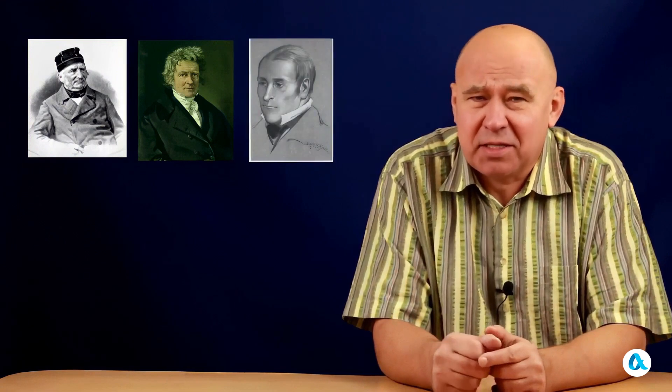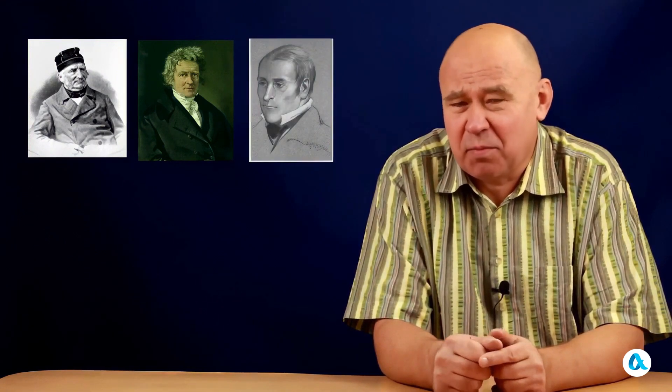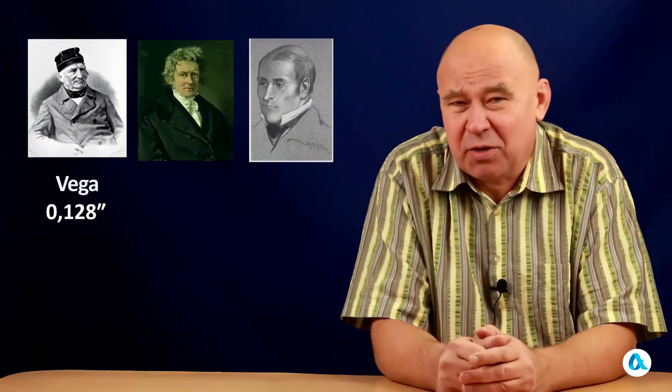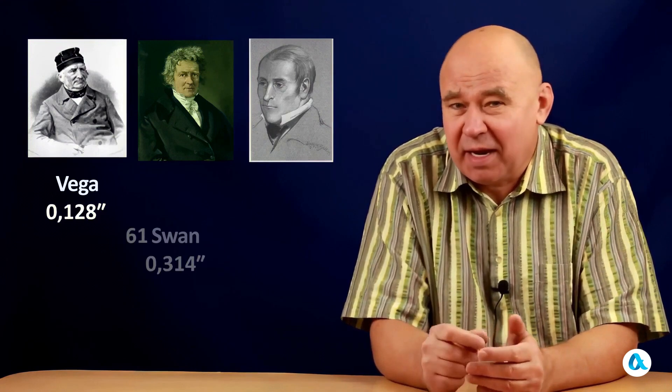And this task was accomplished independently by three astronomers in 1838. This was Friedrich, also known as Vasily Yakovlevich Struve, who worked in Derpt, now Tartu, and he measured the parallax of the star Vega, Alpha Lyrae, which we see overhead in the evenings during autumn. The second astronomer was Friedrich Bessel. He worked with the star 61 Cygni. And the third was the Englishman Thomas Henderson, and he measured the parallax of Alpha Centauri, working in the Southern Hemisphere. Well, they found that Struve's parallax for Vega was about 1.8 angular seconds, and Bessel's parallax for 61 Cygni was around 1.3 angular seconds, while Henderson measured the parallax of Alpha Centauri to be just over one angular second.